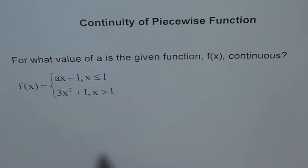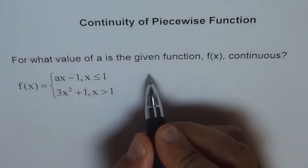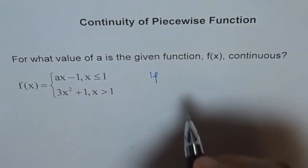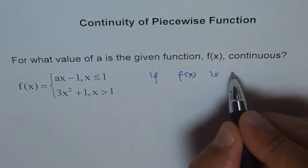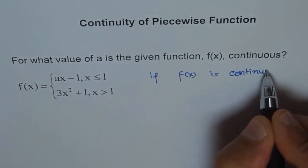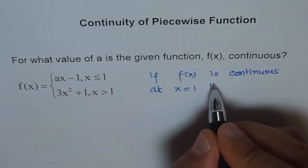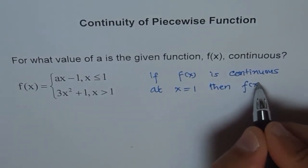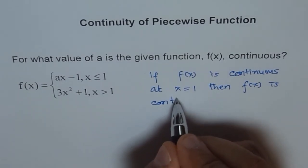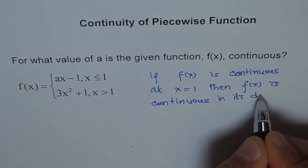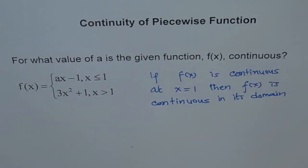The only place this could be discontinuous is at one. So what we have to do is check their value at one to make it continuous. We say if f(x) is continuous at x equals one, then f(x) is continuous in its entire domain. That's very important to understand - there is only one point where it could be discontinuous.